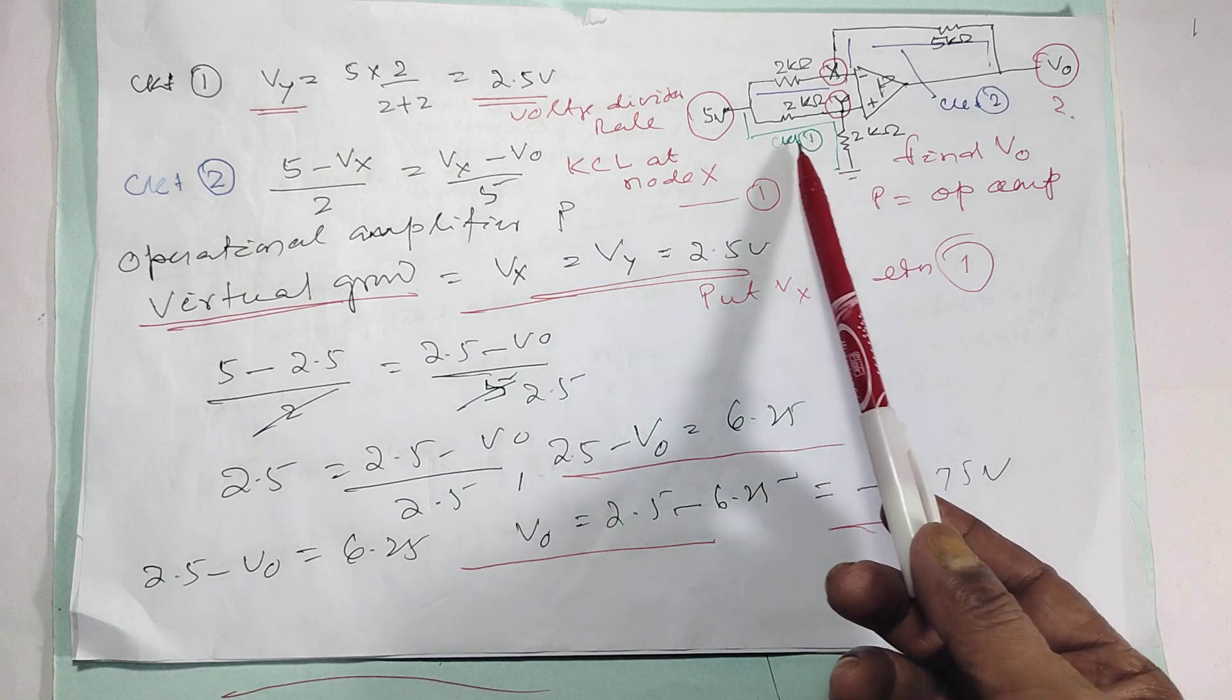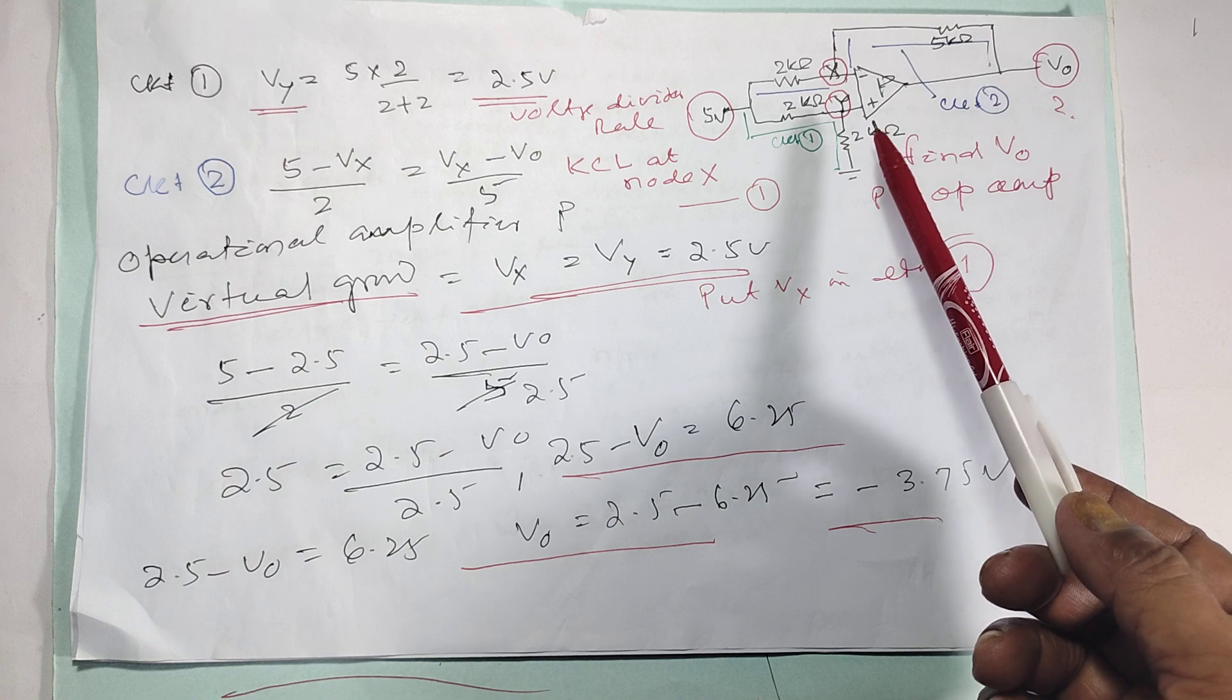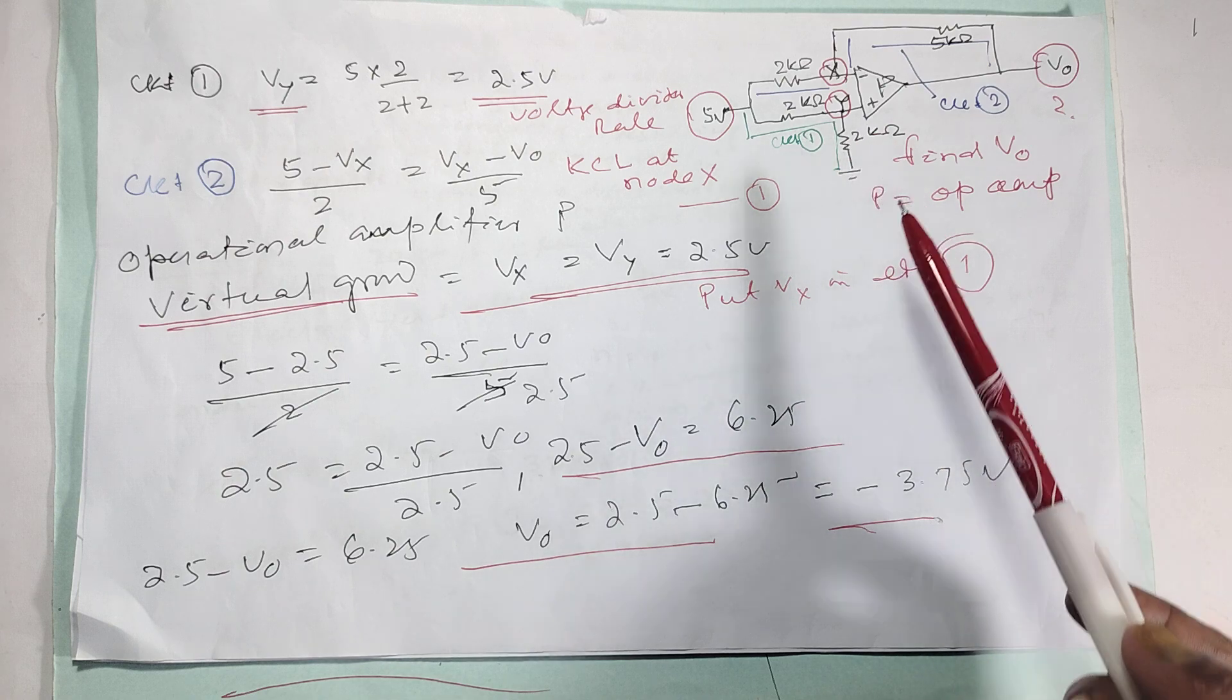In first case, circuit one, you get VI as per the voltage divider rule. So it is coming 2.5 volt.